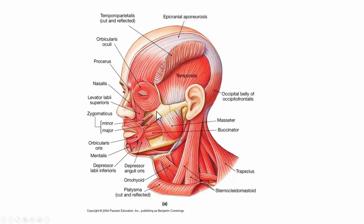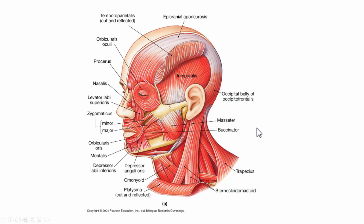Coming off the zygomatic, we have the zygomaticus minor and zygomaticus major. To remember which is which, major typically supports minor — major will be below minor — with one exception being the pectoralis major and minor. We also have the orbicularis oris, which wraps around the lips and purse-strings them. Like when you pucker your lips to blow out a candle, that's what the orbicularis oris does.